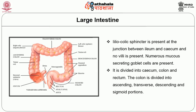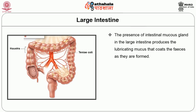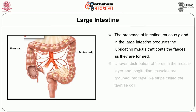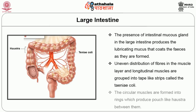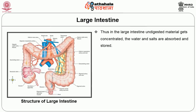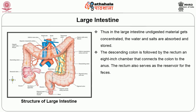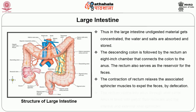The intestinal mucus glands in the large intestine produce lubricating mucus that coats the feces as they are formed. The uneven distribution of fibres in the muscle layer results in longitudinal muscles grouped into tape-like strips called the teniae coli. The circular muscles are formed into rings which produce pouch-like haustra between them. In the large intestine, undigested materials get concentrated as water and salts are absorbed and stored. The descending colon is followed by the rectum, an 18 cm chamber that connects the colon to the anus and serves as a reservoir for feces.